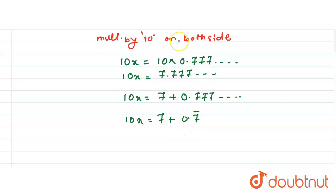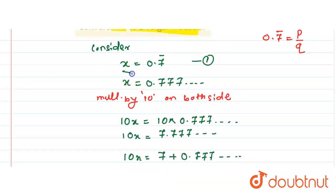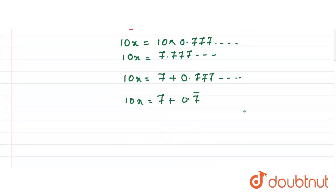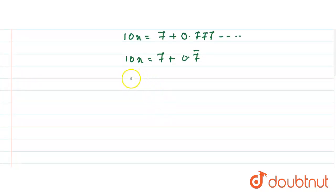But what is 0.7 bar? From equation 1, see this, it is x. So therefore we are replacing that value here. So therefore 10x is equal to 7 plus x, because x is equal to 0.7 bar.